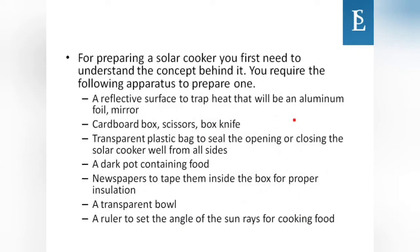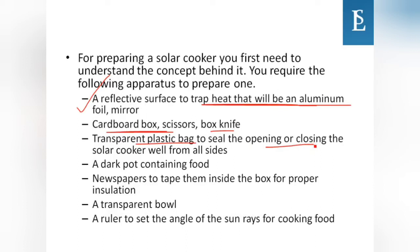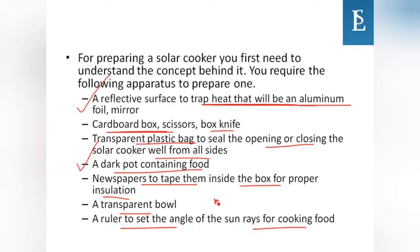To prepare a solar cooker, you need: a reflective surface such as aluminum foil or mirror to trap heat; a cardboard box, scissors, and a box knife; a transparent plastic bag to seal the opening; a dark pot containing food; newspaper for insulation inside the box; and a transparent bowl with a ruler to set the angle of the sun rays.